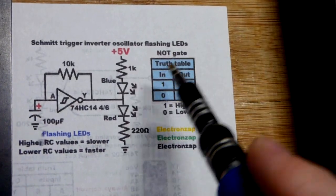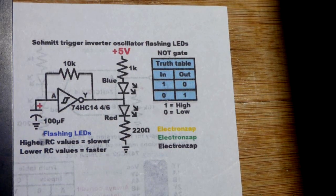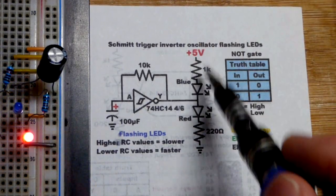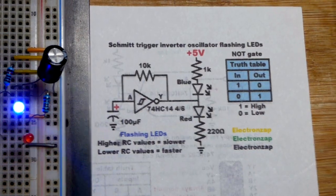Here's the truth table with the NOT gate. When the input's high, the output's low. When the input's low, the output's high. Pretty straightforward. A low output, blue LED lights up. A high output, red LED lights up.